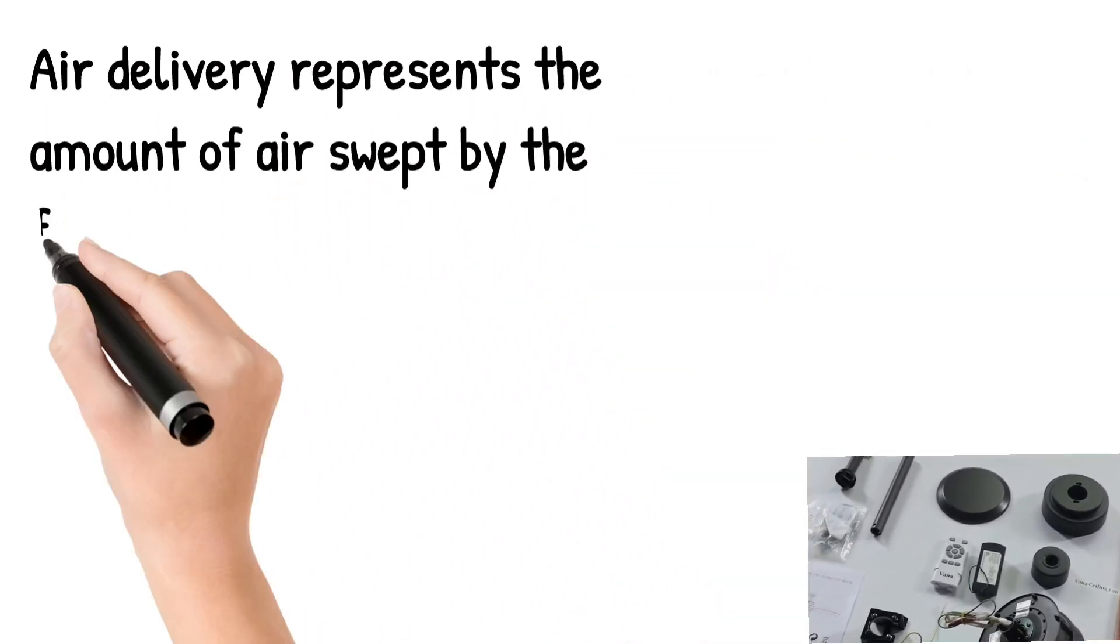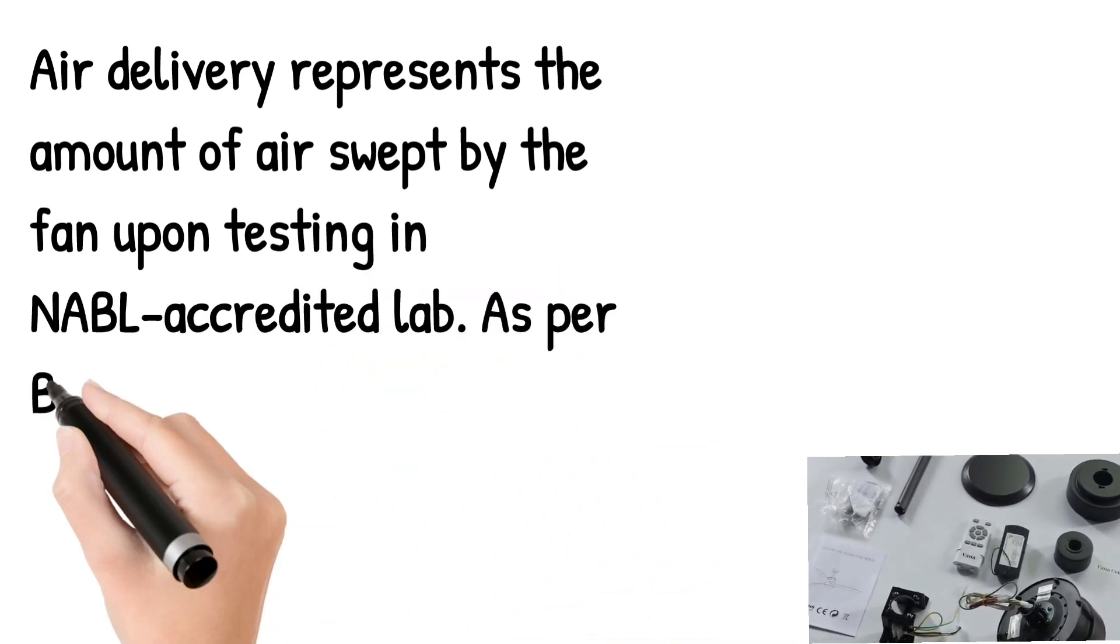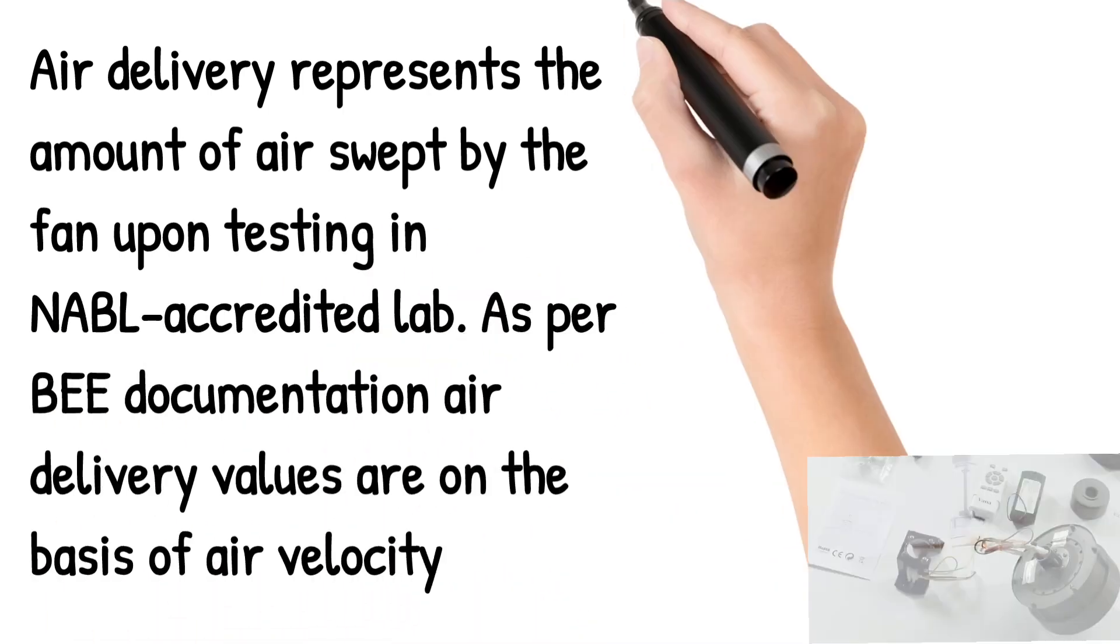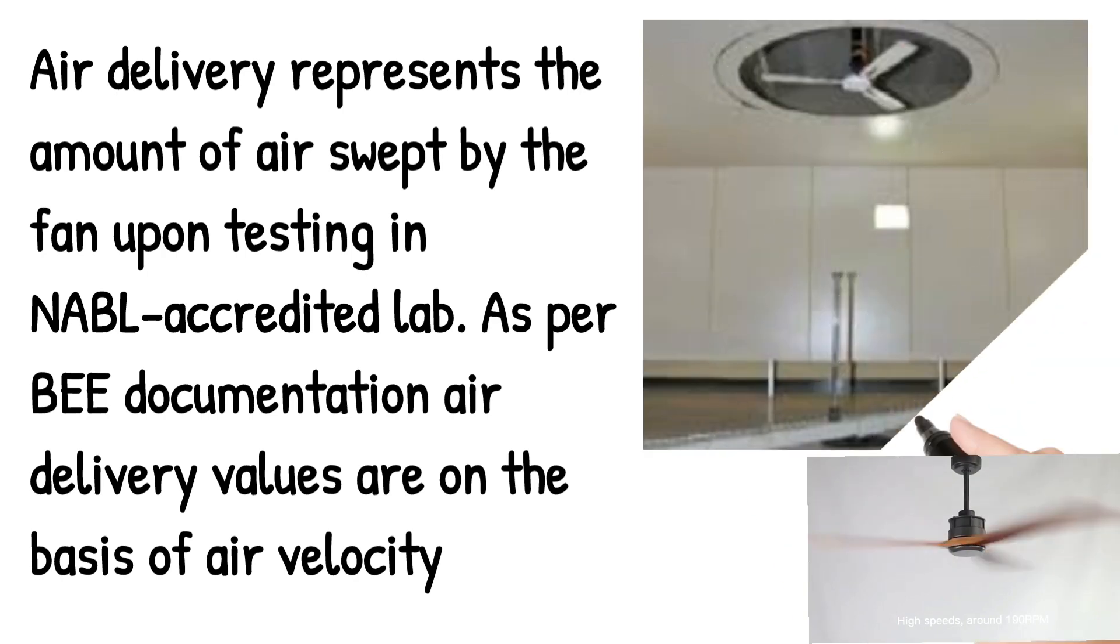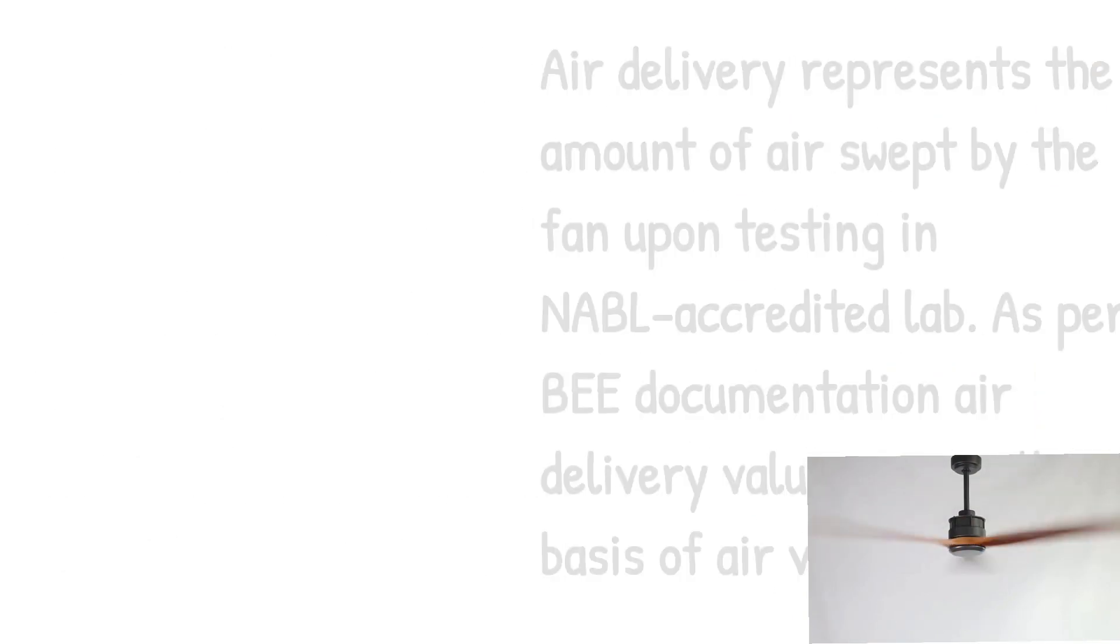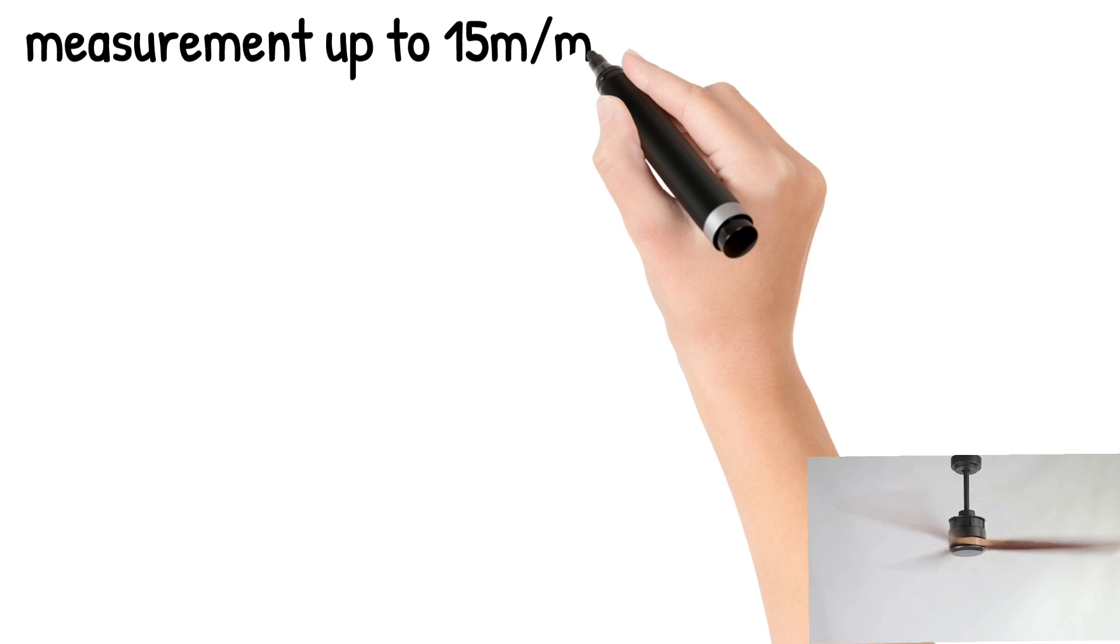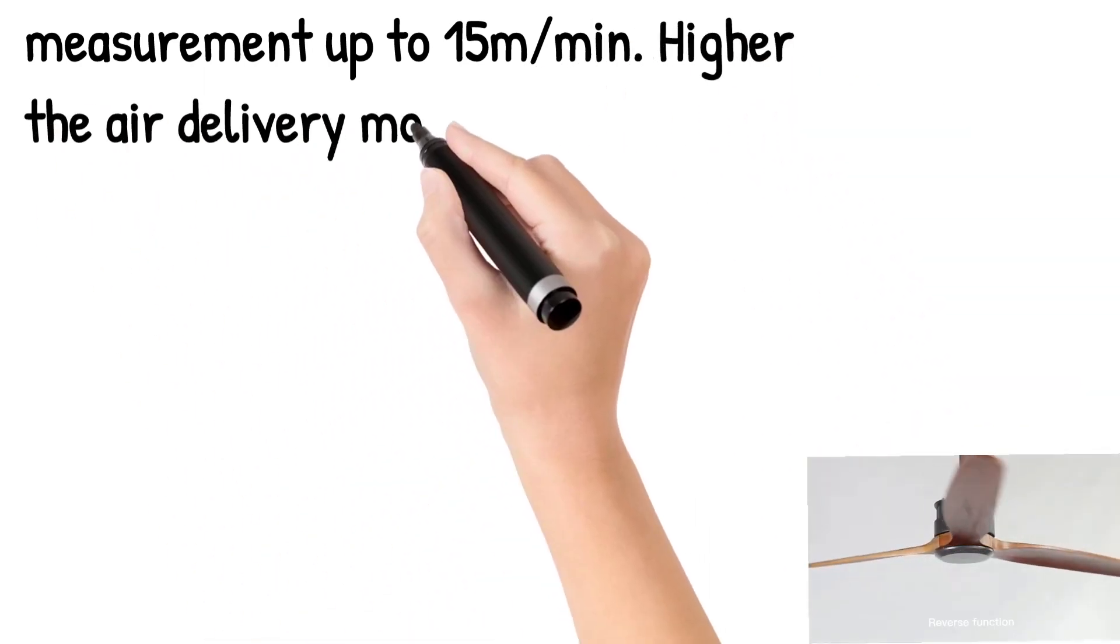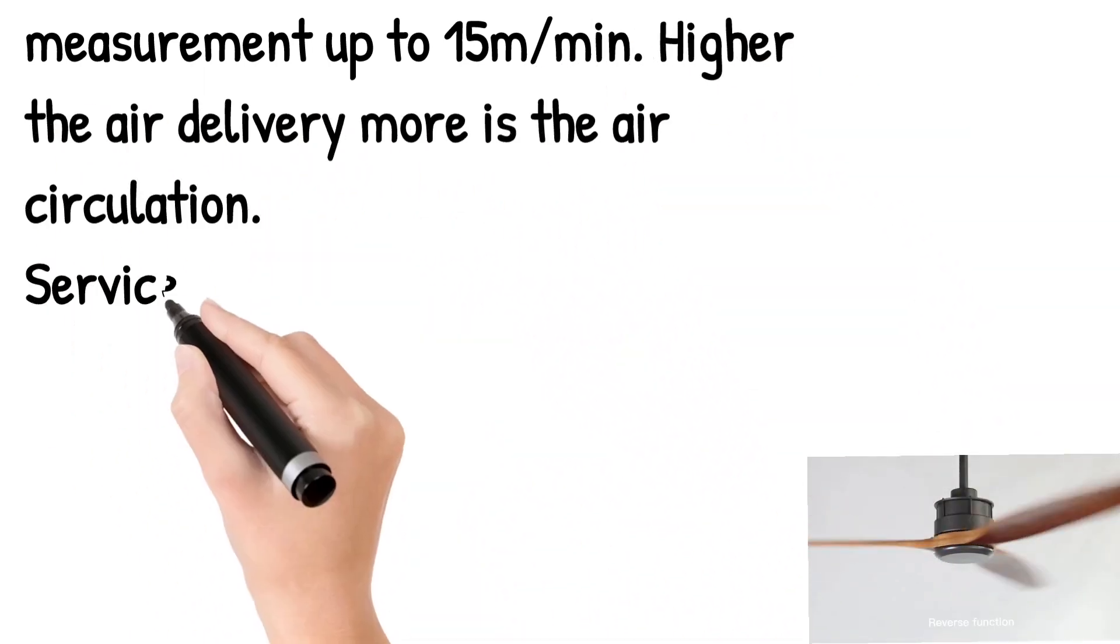Upon testing in a BEE accredited lab as per BEE documentation, air delivery values are based on air velocity measurement up to 15 meters per minute. Higher the air delivery, more is the air circulation.